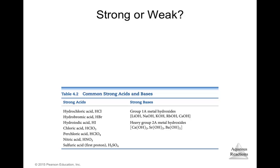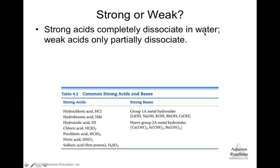Strong acids completely dissociate in water, while weak acids only partially dissociate. For example, hydrochloric acid (HCl) completely dissociates into H⁺ and Cl⁻ — you will never see HCl molecules in water. This makes it a strong electrolyte. Weak acids dissociate only a small percentage — maybe 1 to 10% of the concentration.